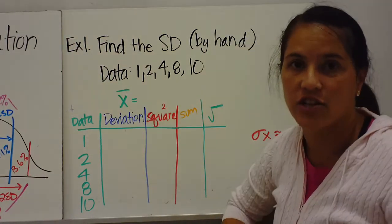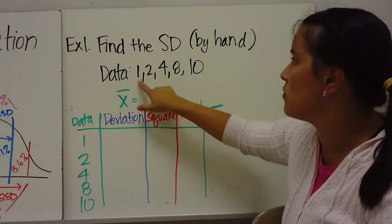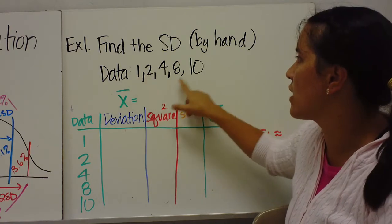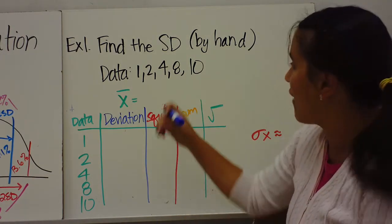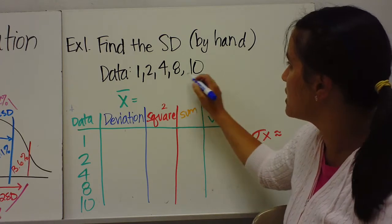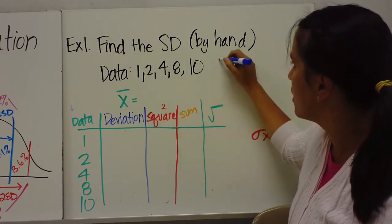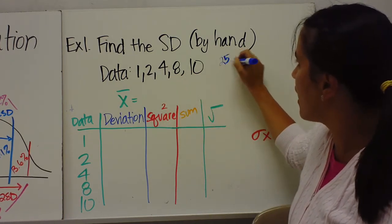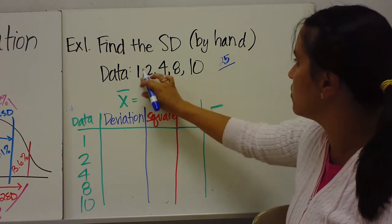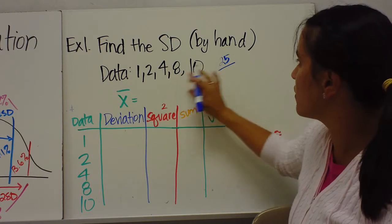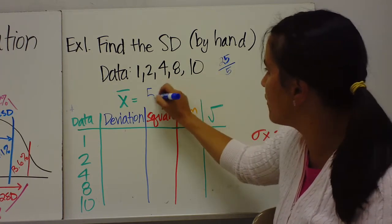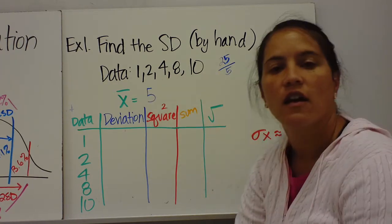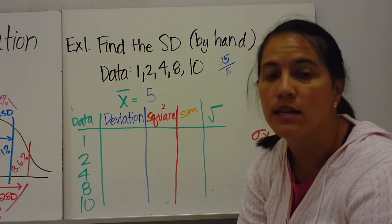Example one: find the standard deviation by hand. Our data is 1, 2, 4, 8, and 10. First, find the mean: 1+2+4+8+10 = 25, divided by 5, so the mean is 5.